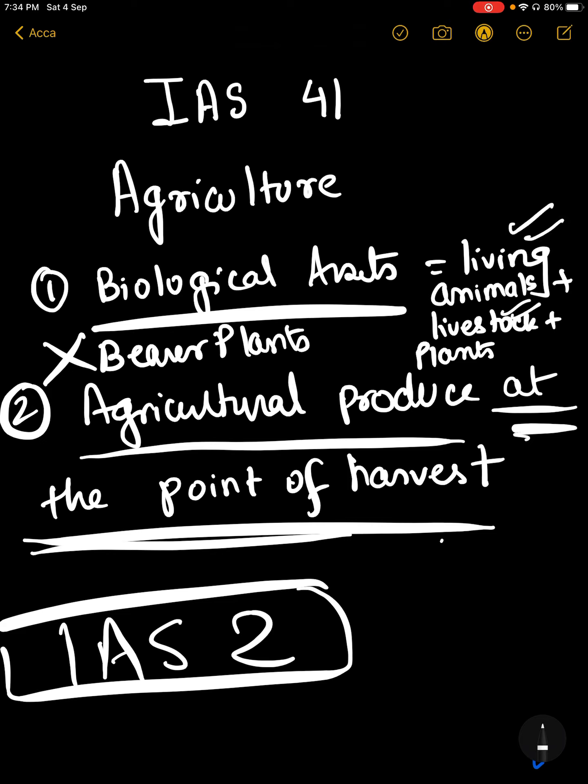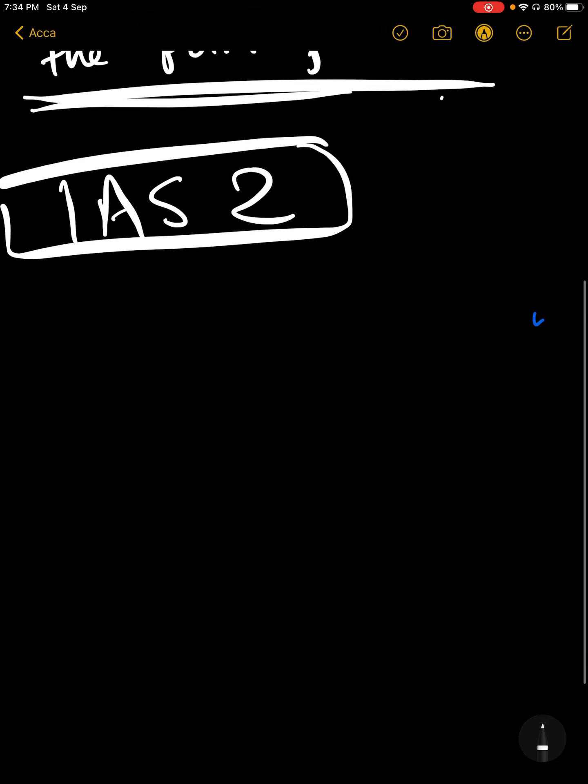What is a bearer plant? A bearer plant is one that bears other agricultural produce but is not harvested itself.